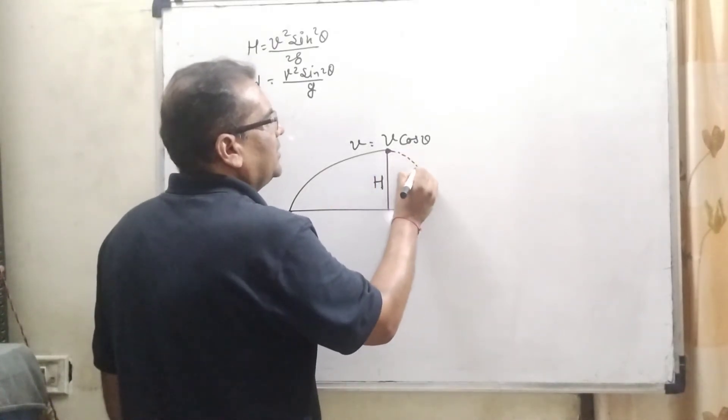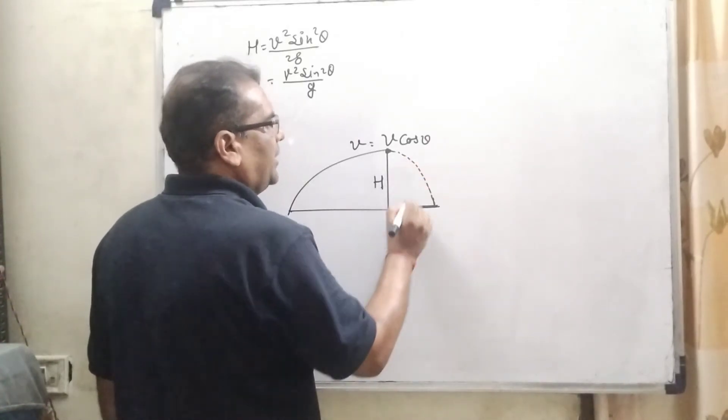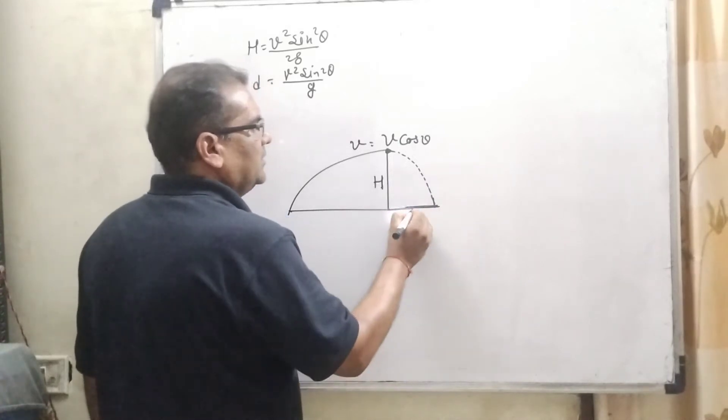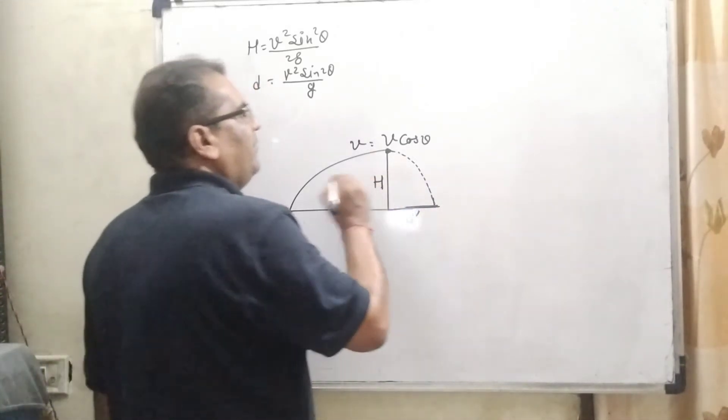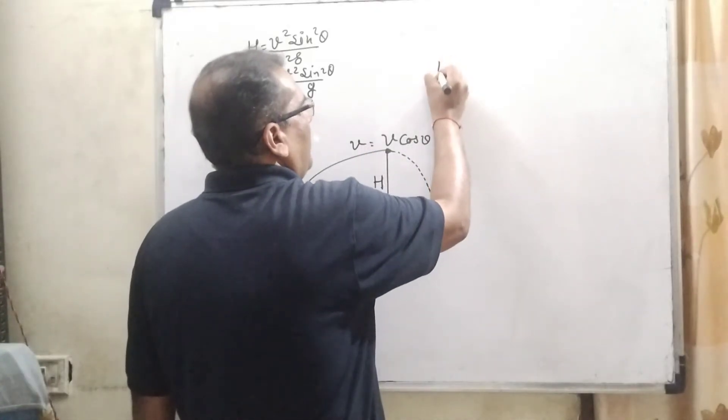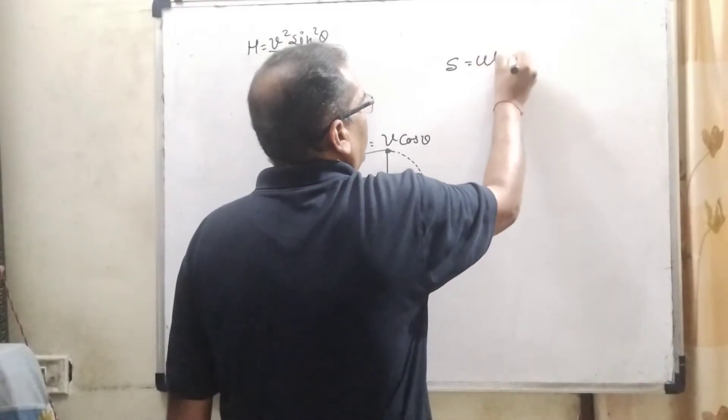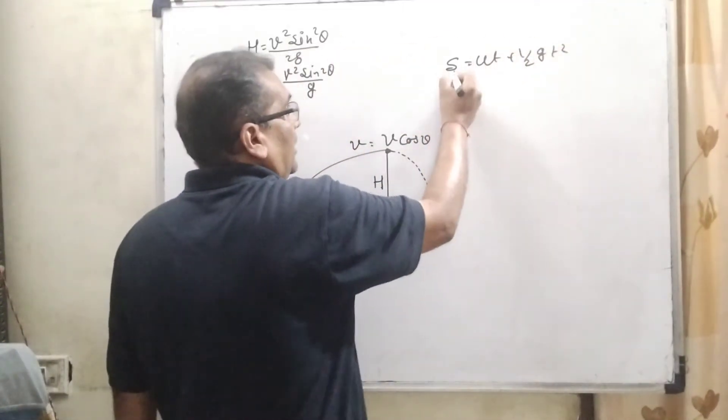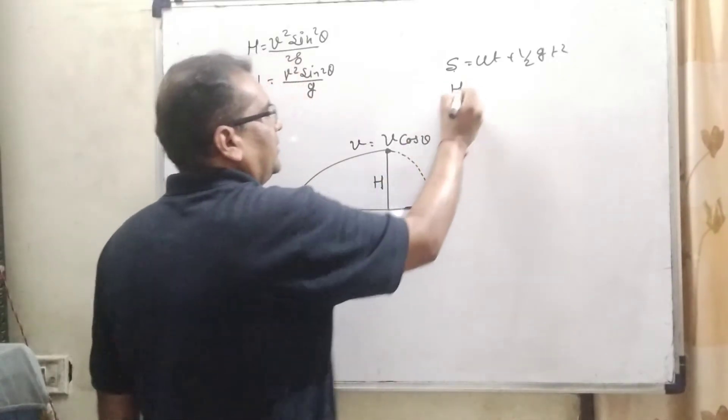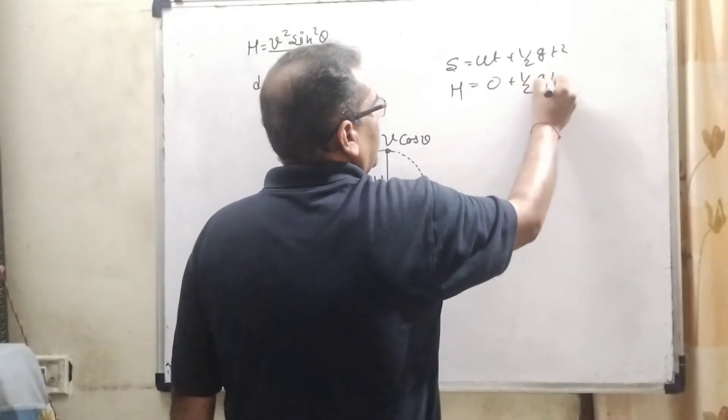An object is thrown or projected at a different place. Consider D dash. Here, the time of flight is also changed. For the time of flight, we know that S equals U t plus half g t squared. Here S is maximum height, initial value zero, 1 by 2 g t squared.